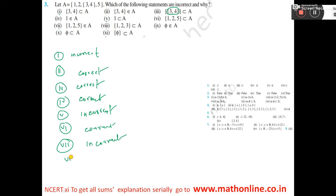Number 8: {1, 2, 3} subset of A. Three is not there as an element. So, this is not a subset. So, this is incorrect.